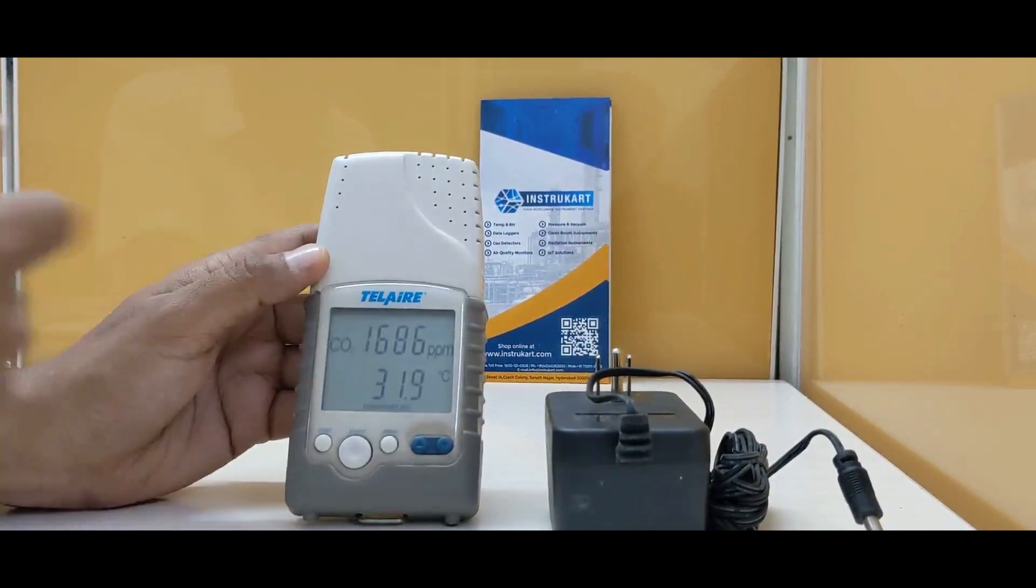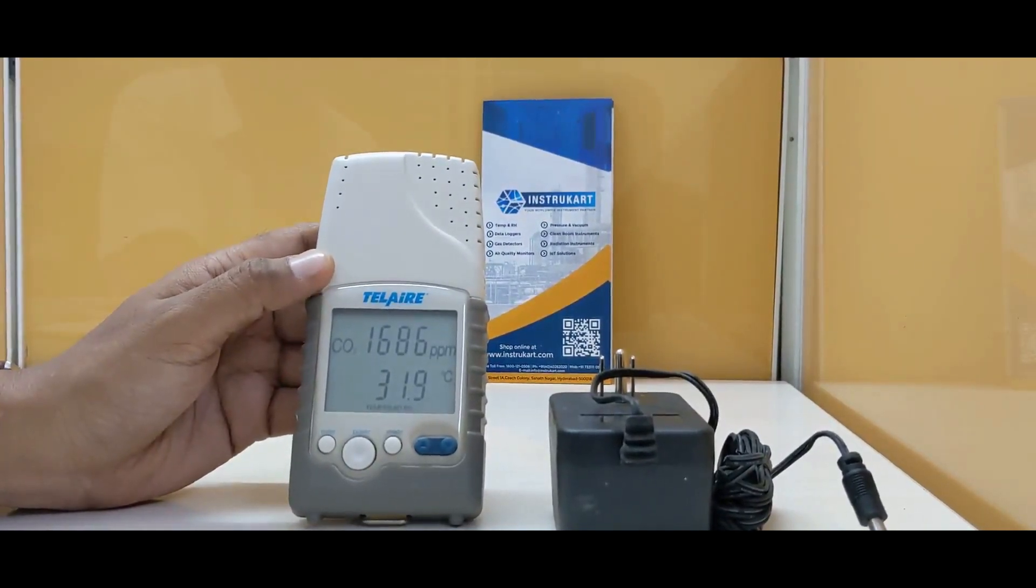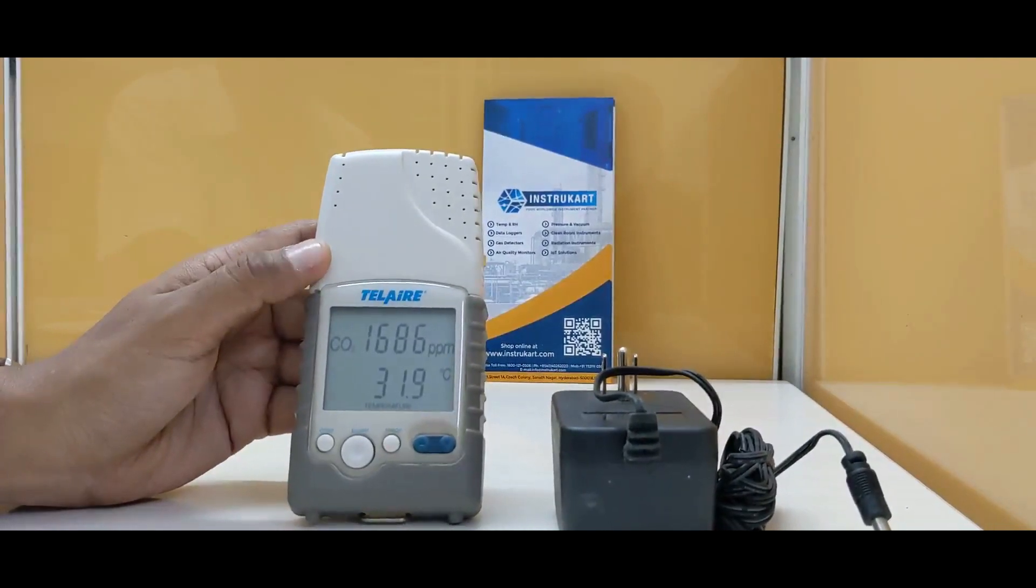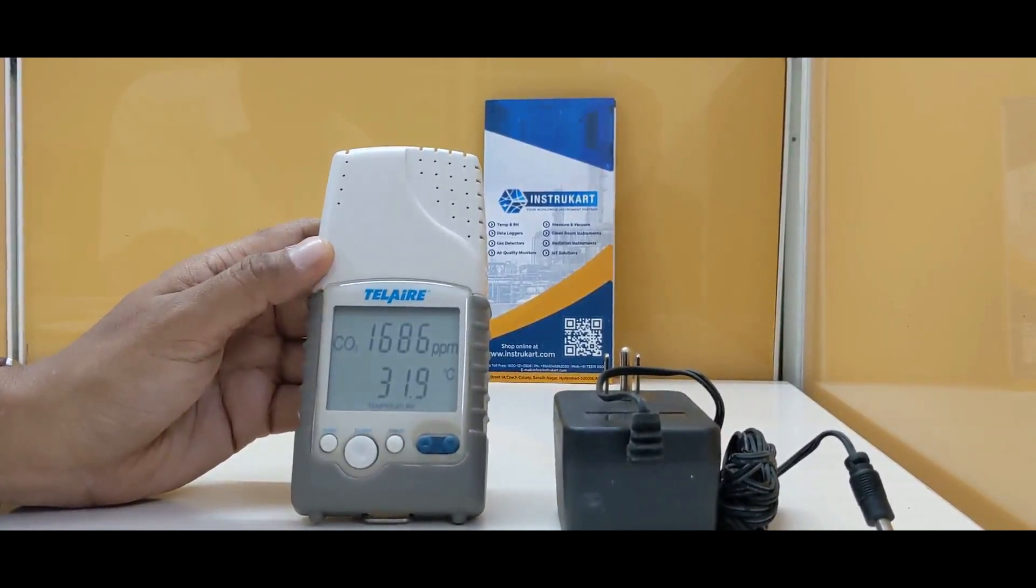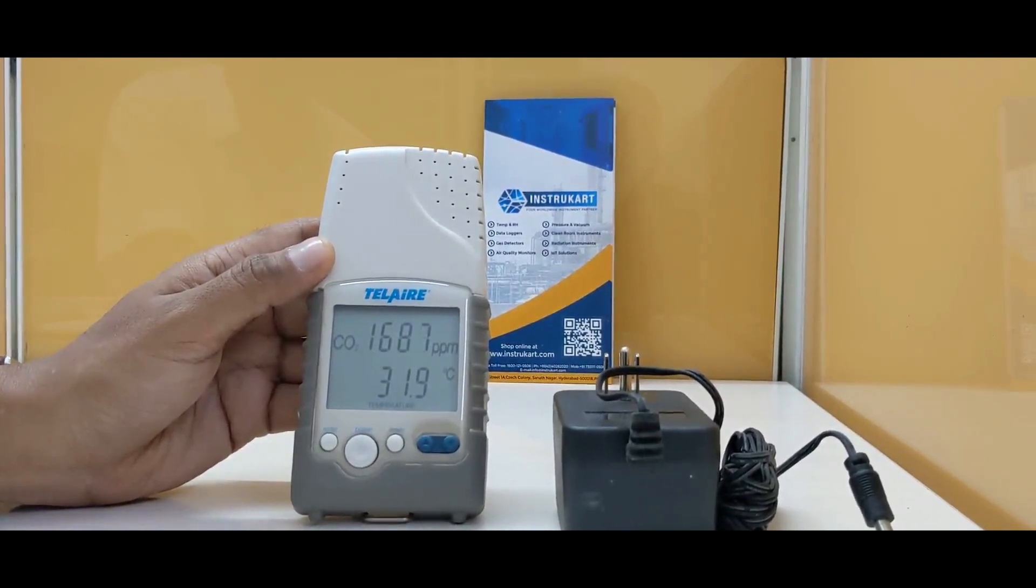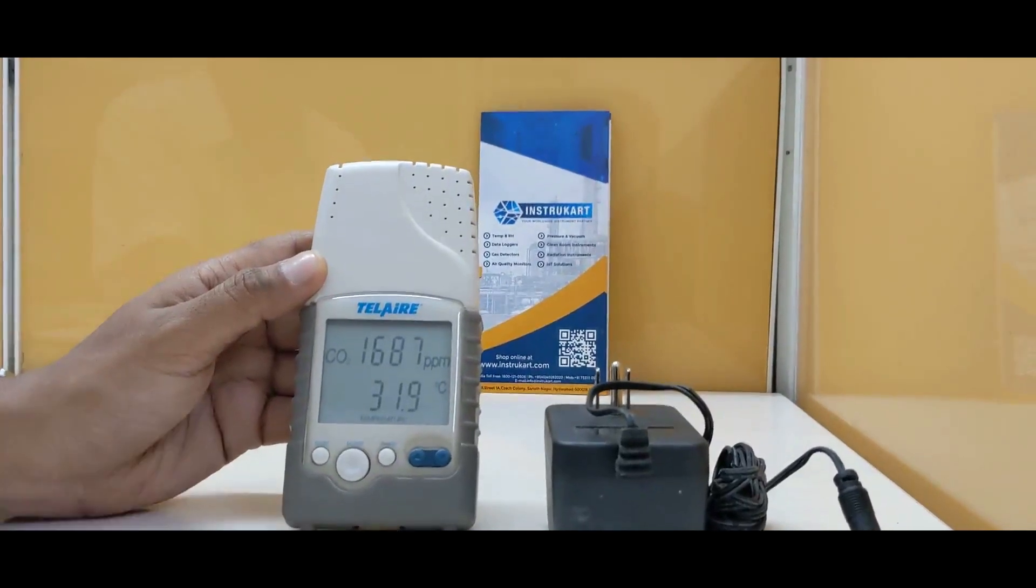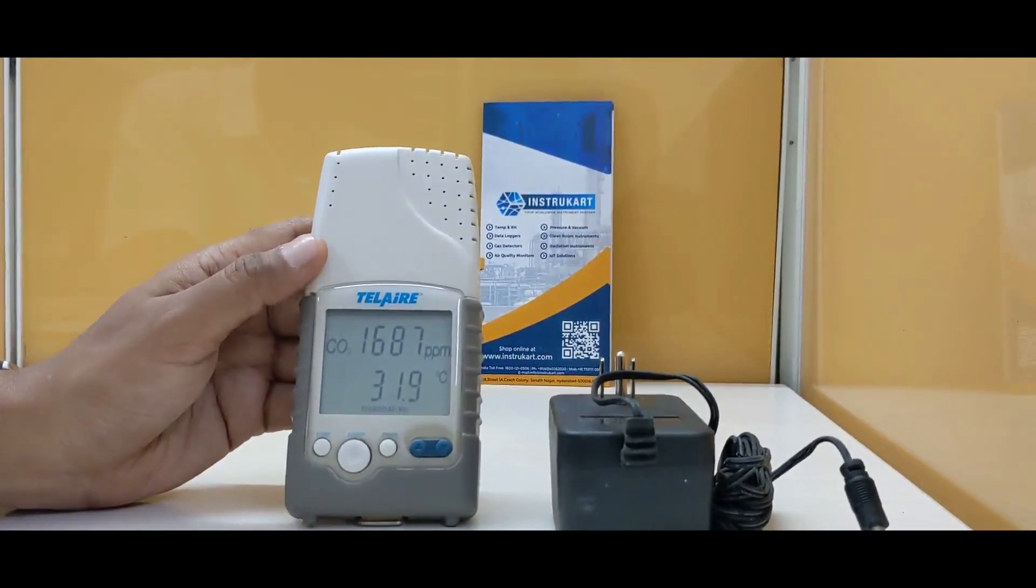For the accuracy of the carbon dioxide, it is plus or minus 50 ppm or 5% of the reading. For the temperature, it has a dependency of plus or minus 0.1% of reading per degree Celsius or plus or minus 2 ppm per degree Celsius, whichever is greater, with a reference of 25 degrees sampling.